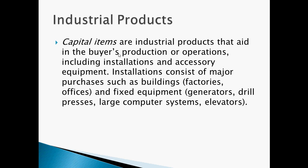Capital items are industrial products that aid in the buyer's production or operations, including installations and accessory equipment. Installations consist of major purchases such as buildings, factories or offices, fixed equipment, generators, drill presses, large computer systems, and elevators.